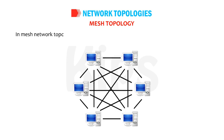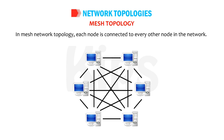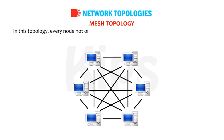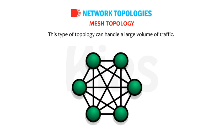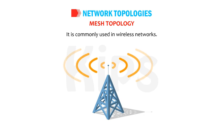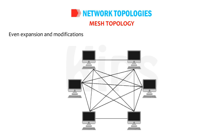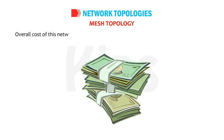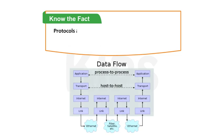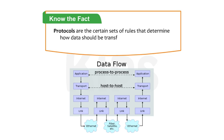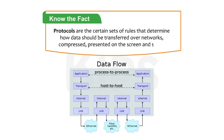Mesh topology — each node is connected to every other node in the network. Every node not only sends its own signals but also relays data from other nodes. This topology can handle a large volume of traffic and is commonly used in wireless networks. If one component fails, there is always an alternative path so that data transfer is not affected. Expansion and modifications can be done without affecting other nodes. However, the overall cost is extremely high compared to other network topologies. Protocols are certain sets of rules that determine how data should be transferred over networks, compressed, and presented on the screen.